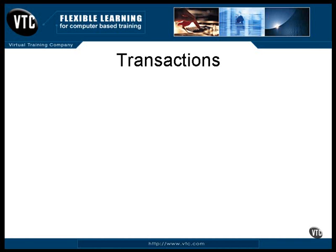A transaction is a collection of separate operations that go together to perform one larger operation. For example, you may want to sell an item by reducing the count of the available inventory, adding it to a shipping list, issuing a bill to a customer, and possibly a few other things here and there.